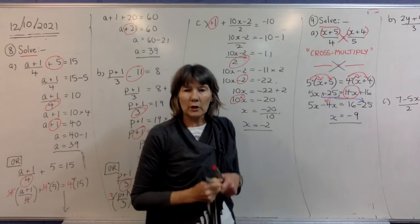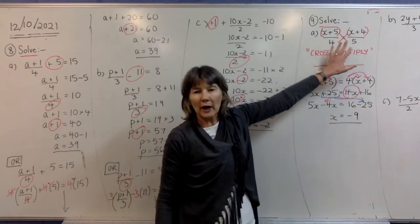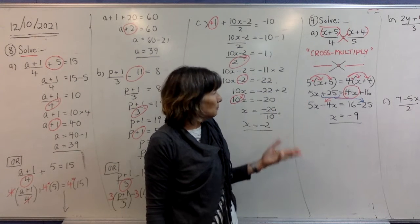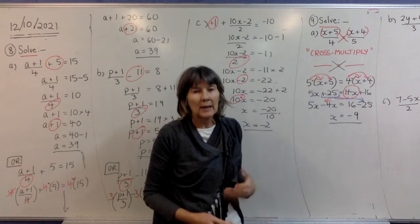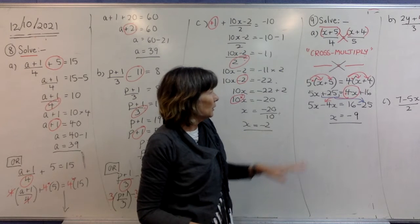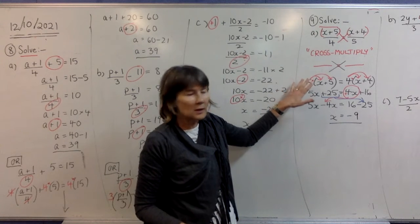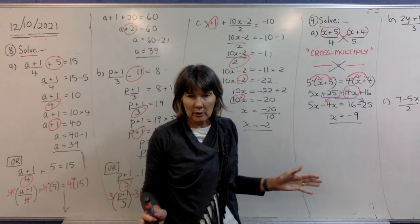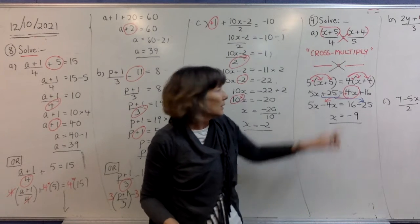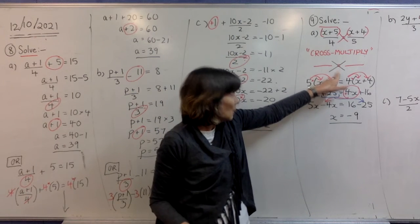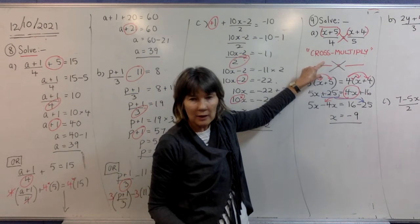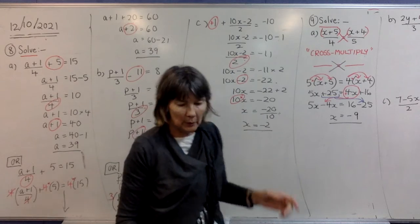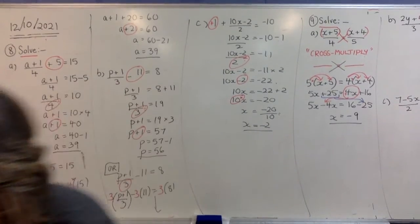The beauty of cross-multiplying is that it gets rid of your fractions in one go, so in the next line there are no fractions left. It's basically the same as what we were doing before, just done a little bit differently. As I said, you do not do this unless you have a fraction equals a fraction. You can't have anything else — no extra multiplication, it's got to have an equals with one entire fraction on the left-hand side and one entire fraction on the right-hand side, or it won't work. We're going to do two more of these doing cross-multiplying to practice it.